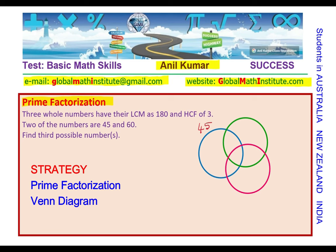Let us assume that blue circle represents factors of 45, green circle represents factors of 60. Let us do prime factorization of 45 and 60.